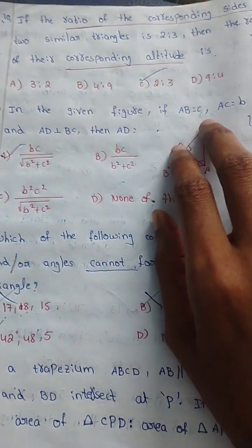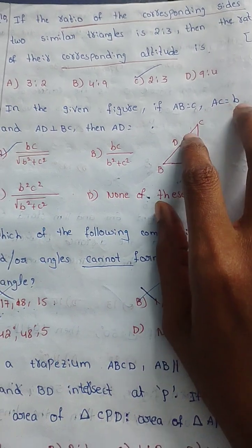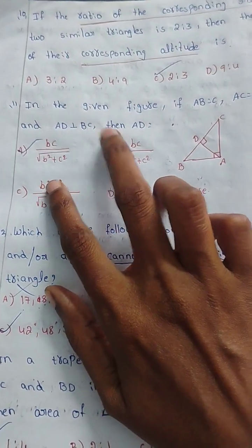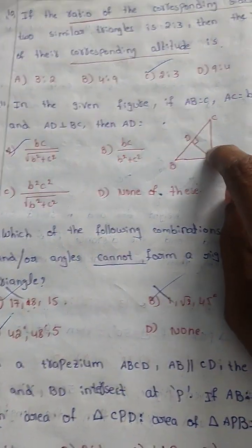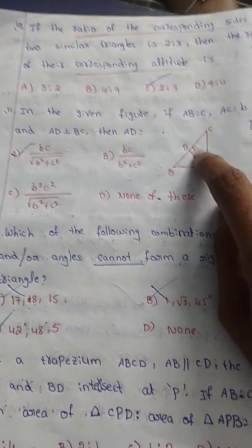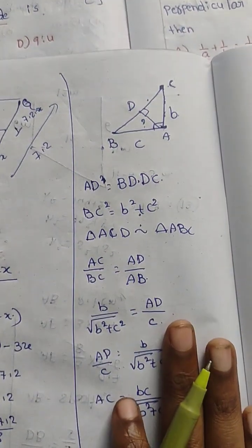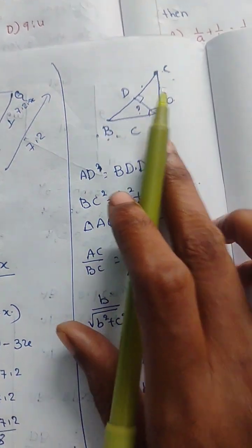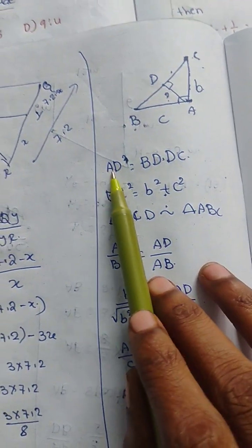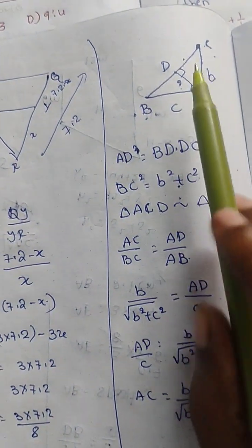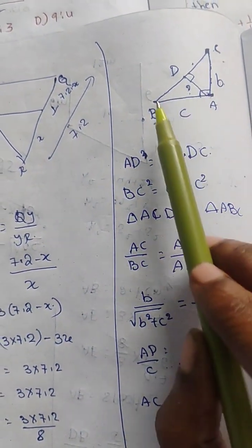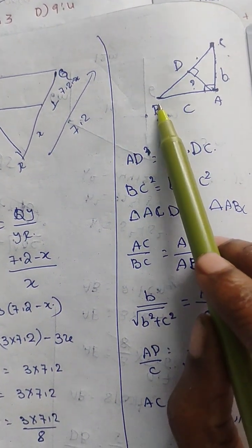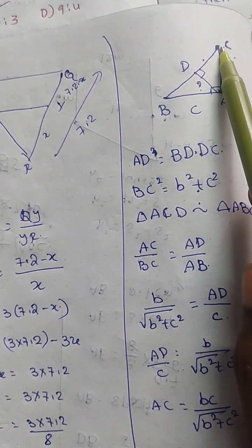Next question: in the given figure, if AB is equal to c, AC is equal to b, and AD is perpendicular to BC, then find AD. I will explain — we will use AD² = BD × DC, and AD equals BD × DC.